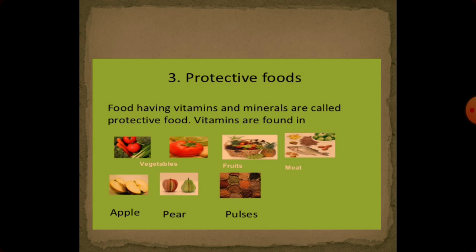Number three kind of food is protective food. These foods have vitamins and minerals. Vegetables, fruits, meat, apple, pear, and pulses — all these food items have vitamins and minerals.